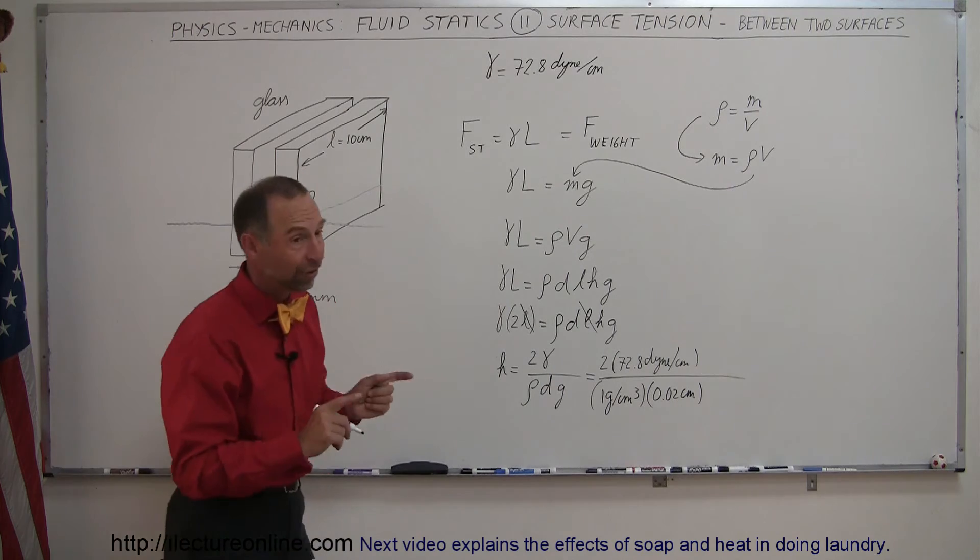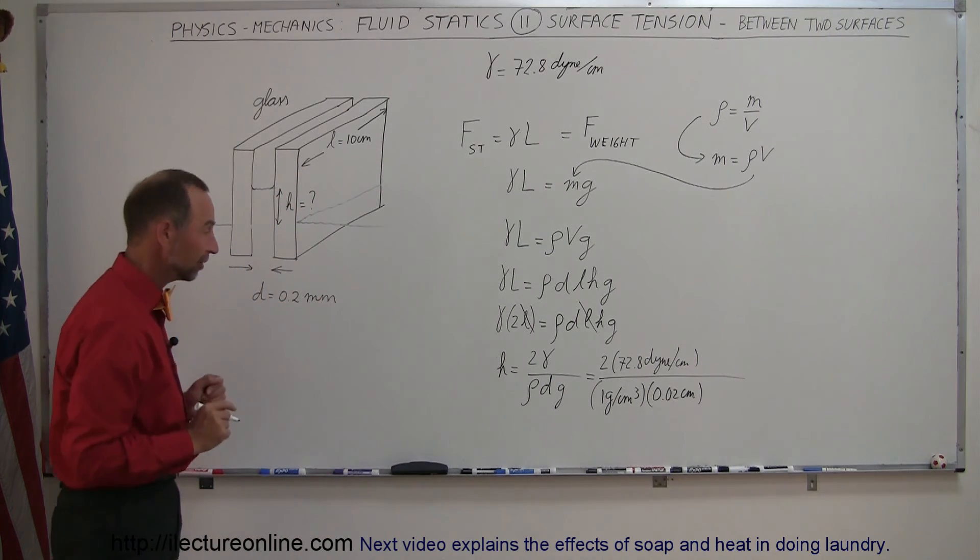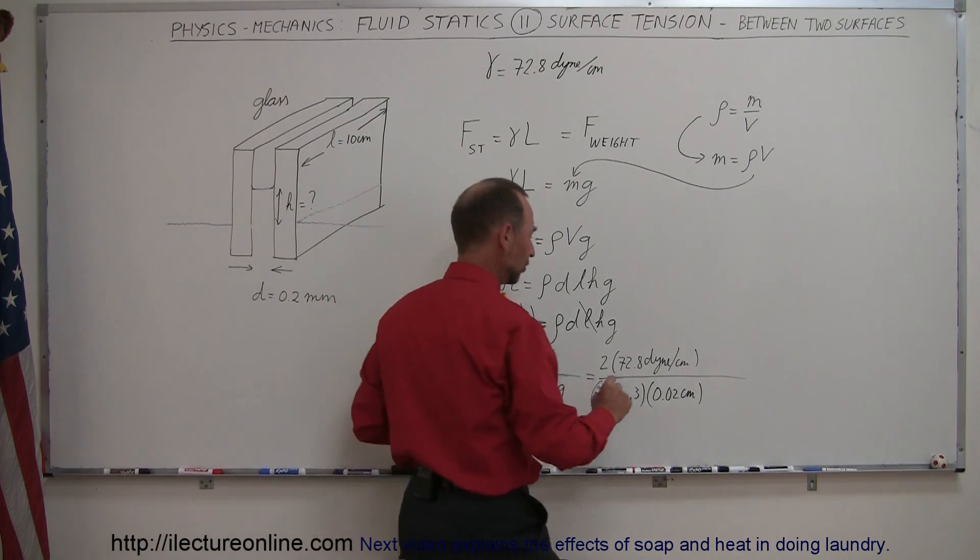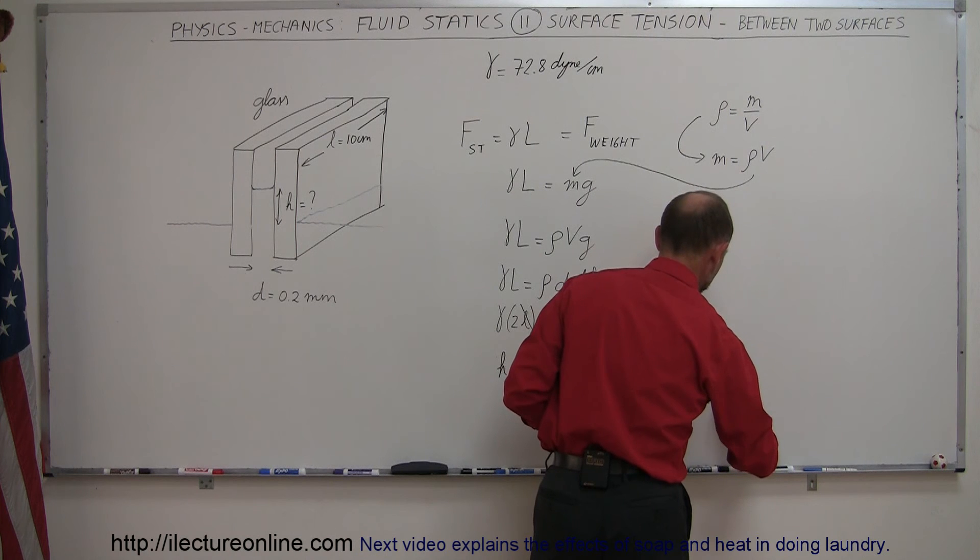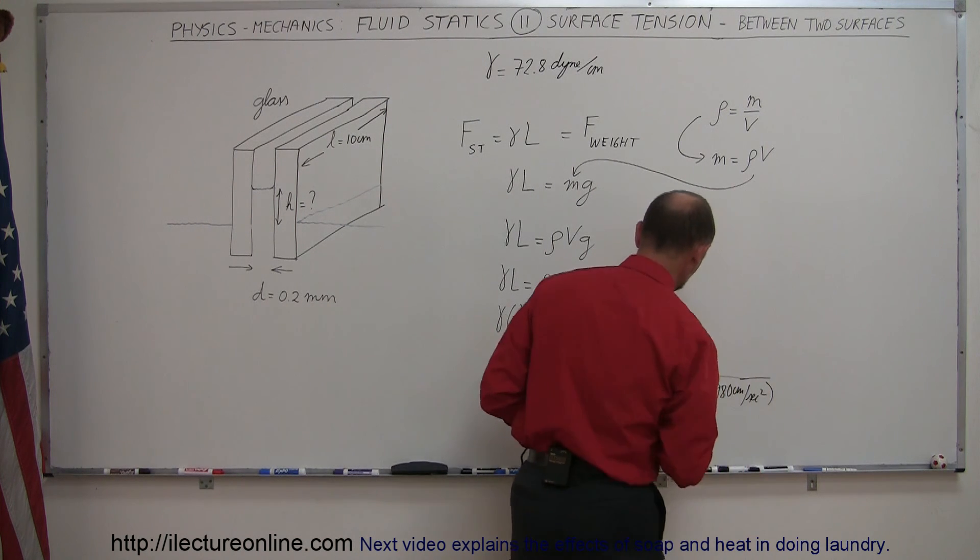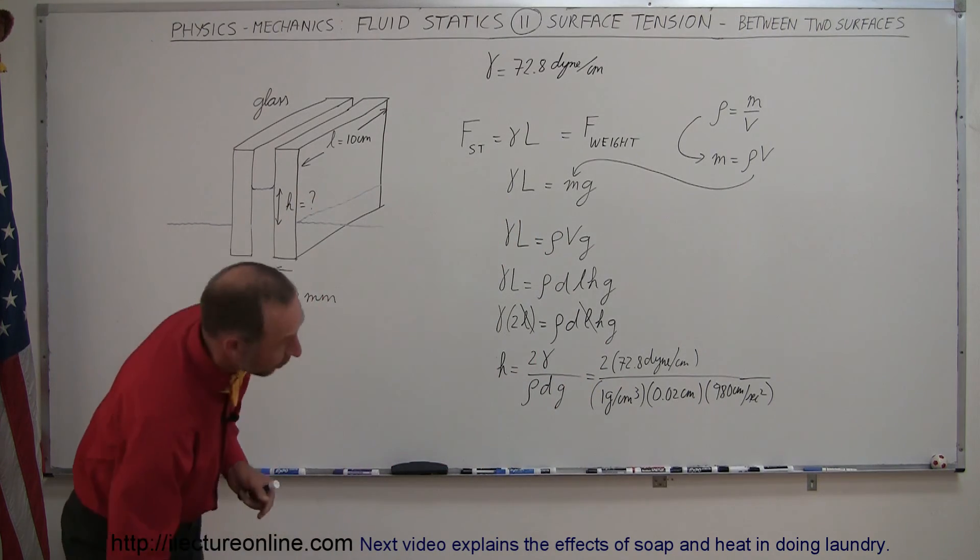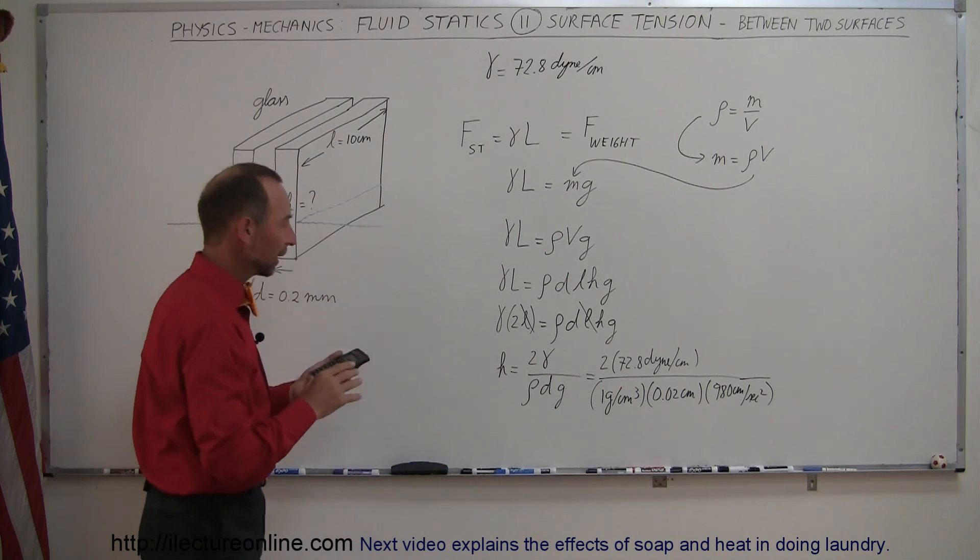Times the distance between the plates, which is 0.02 centimeters—remember we have to convert from millimeters. And g in centimeters is 980 centimeters per second squared, and that should give us the height in centimeters that the column of water will rise between the two plates.